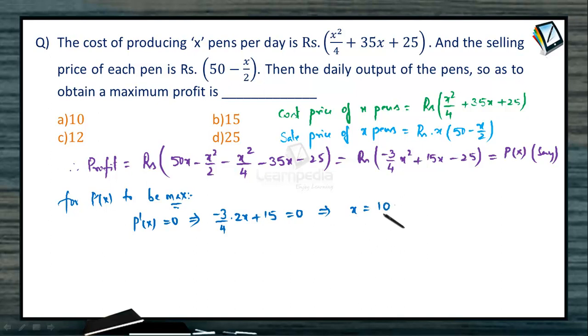Now once that x = 10 is observed, we need to identify whether we are getting maximum or minimum. Then what is P''(x)? The P''(x) would become -3/2 for all x, which is clearly negative. Therefore, P(x) is maximum when x becomes 10.